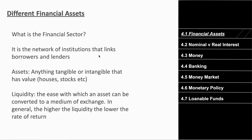First we want to talk about what the financial sector is. It's basically a network of institutions that link borrowers and lenders — for instance, banks and the stock exchange. An asset is simply something tangible or intangible that has value, such as a house, a car, or stock.